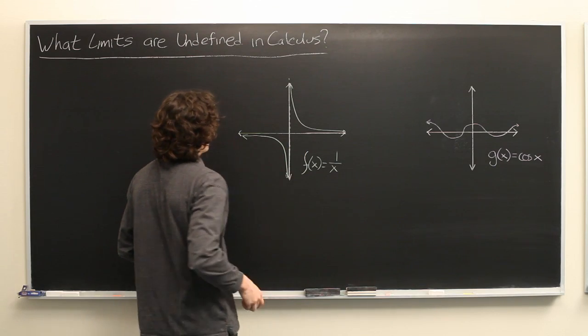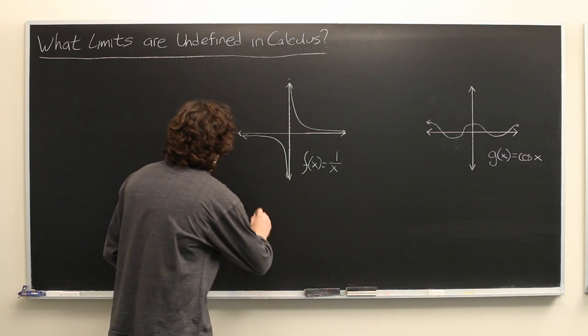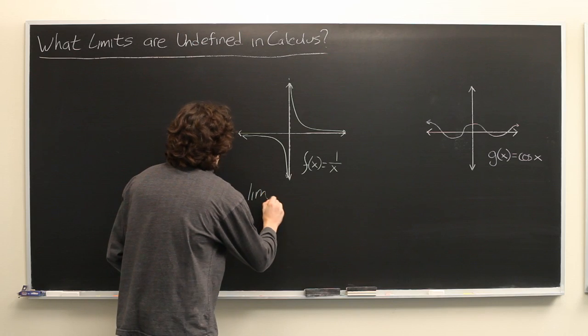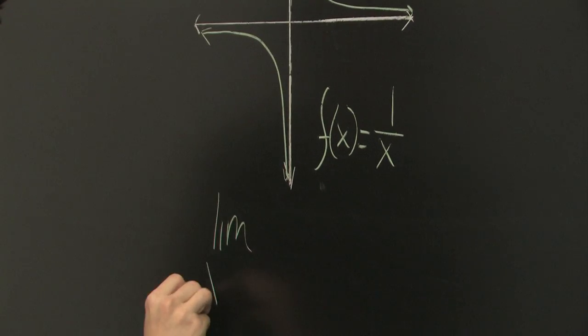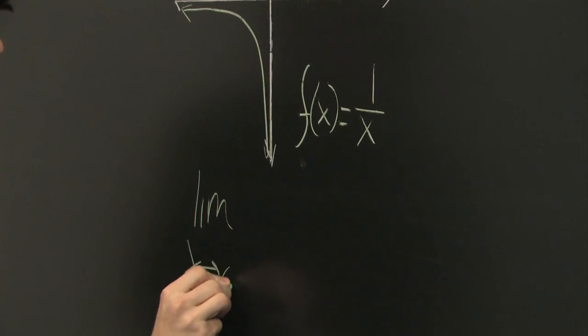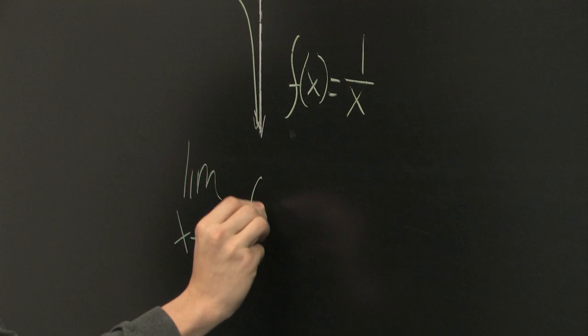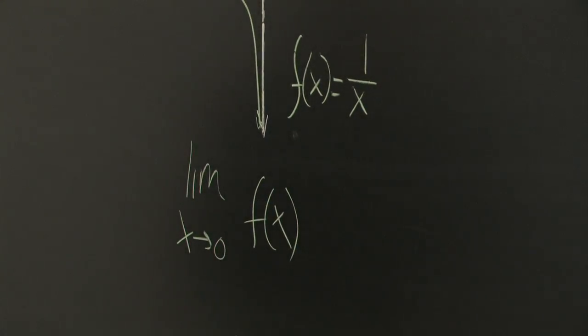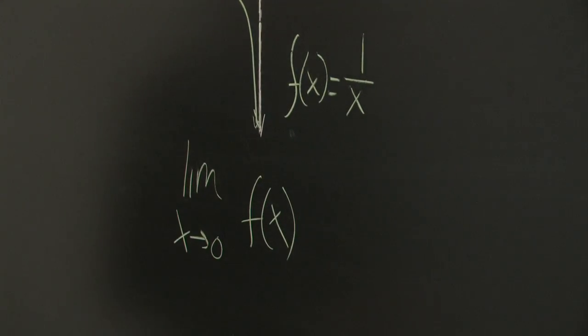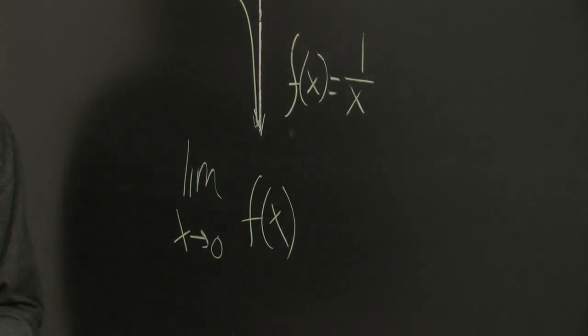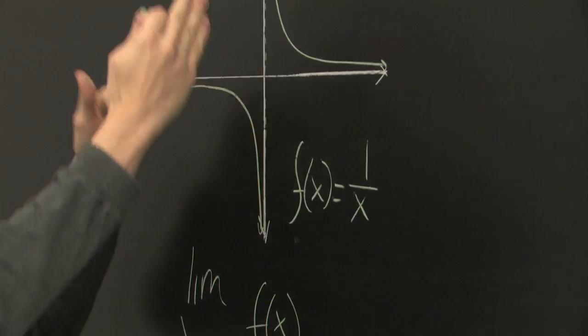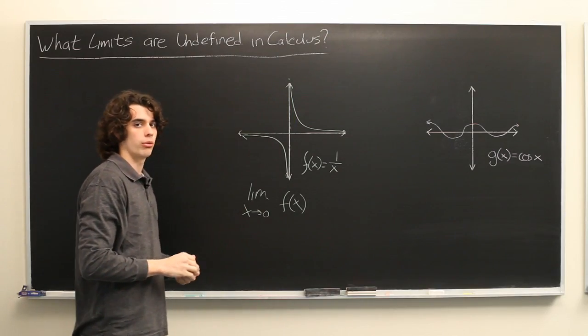We'll take a look at the green one first. Suppose that we're asked the limit as x approaches 0 of f of x. Well, the slight problem here is that the function approaches different values as you approach 0 from different directions.